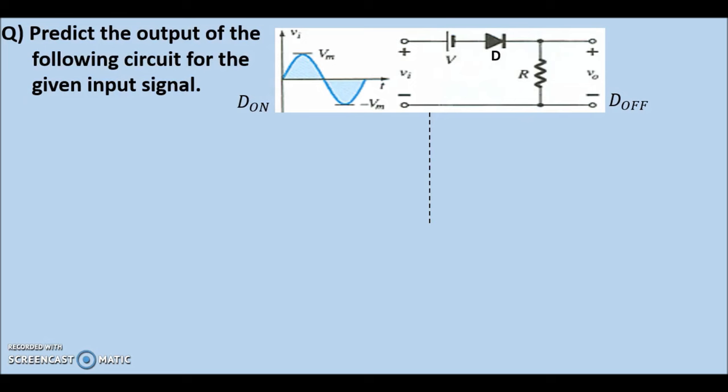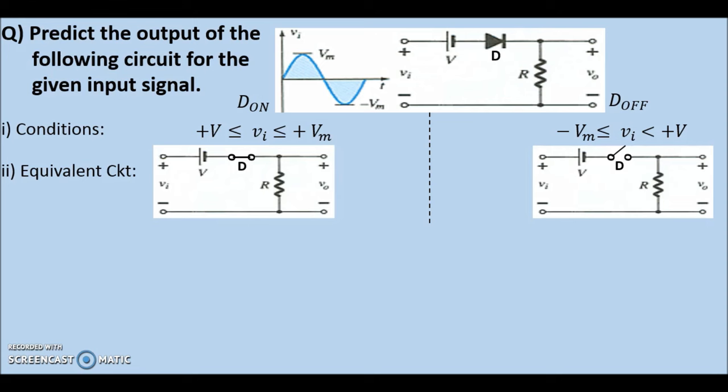Let us begin our analysis of the given circuit. Step 1, we divide the page into two sides and label them as dOn and dOff sides. Step 2, we write the conditions for dOn and dOff obtained in the previous slide. Step 3, we redraw the circuit with diode equivalent circuit for dOn and dOff conditions. Step 4, we write the KVL for dOn and dOff conditions for the equivalent circuits.